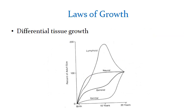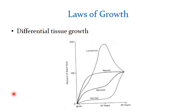Different tissues grow at different times and at different rates. Lymphoid growth is maximum in the first six years of life and then atrophies. Neural growth is maximum in the first two years of life and then plateaus. Similarly, genital growth is maximum with the pubertal spurt.